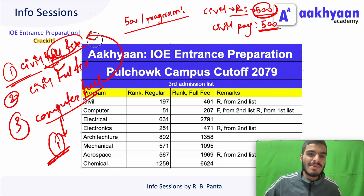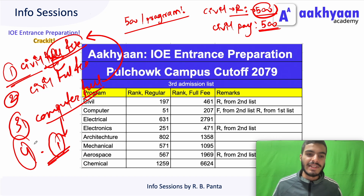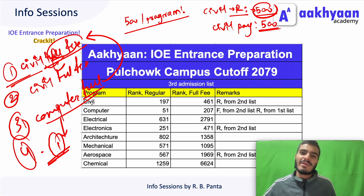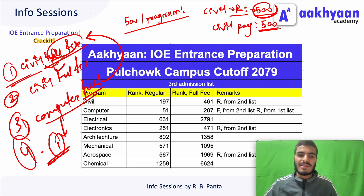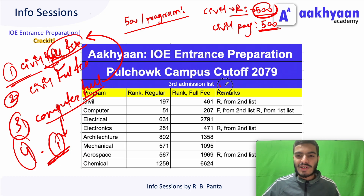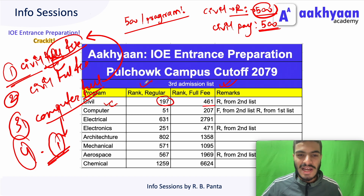So you have to choose from the first, second, and third admission lists — you have to choose directly what your admission is. You have to shift or change the admission. Just as in the past, it shifts automatically. If you have computer full fee, you have to visit and meet the respective college. Let's go over the third admission list — the rank of civil class and computer full fee.